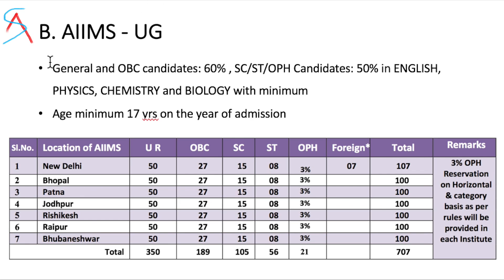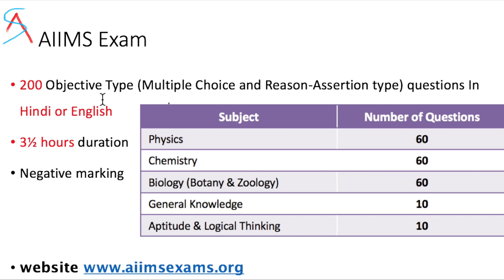The second exam is AIIMS. Forms are available from the end of January, the exam is conducted in the last week of May, and results are declared in the first or second week of June. The minimum requirement is passing English, Physics, Chemistry, and Biology with an average of 60% for general and OBC candidates, and 50% for category students. The minimum age is 17 years. Previously there was only one AIIMS in New Delhi; now there are six more, making a total of seven AIIMS with 707 total seats. The AIIMS exam has 200 MCQs, the question paper is in Hindi and English only, duration is 3.5 hours, and there is negative marking. For more details log on to aiimsexams.org.